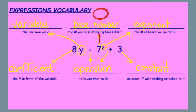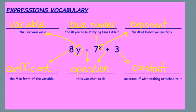The base number is the number you are multiplying times itself. The exponent is the number of bases you multiply.